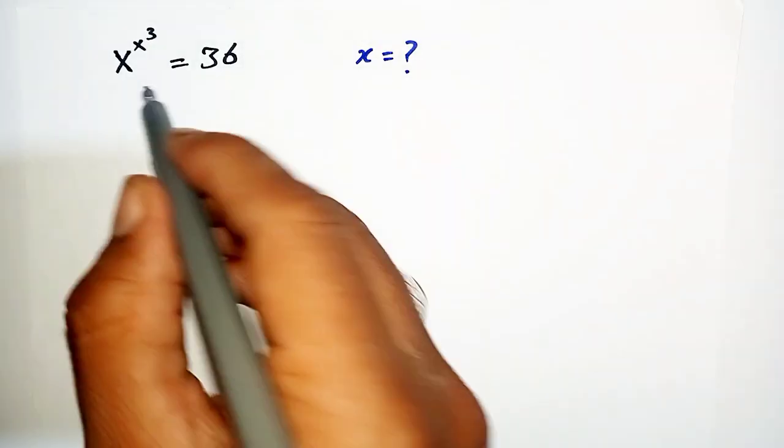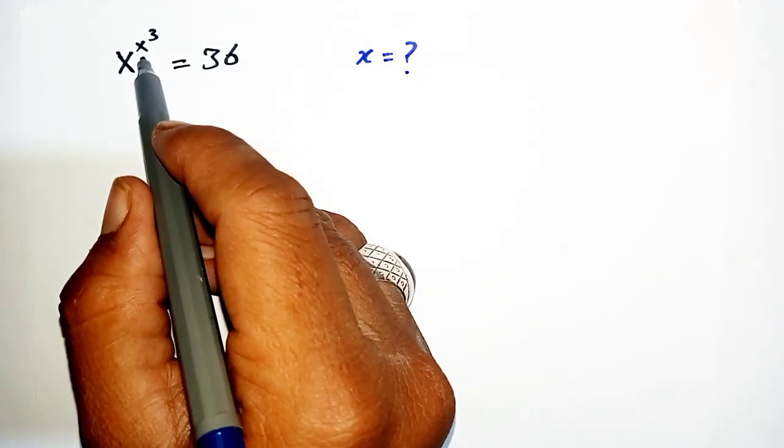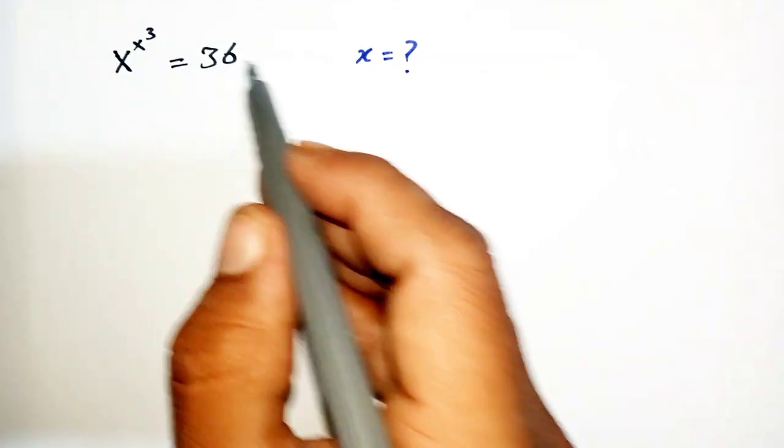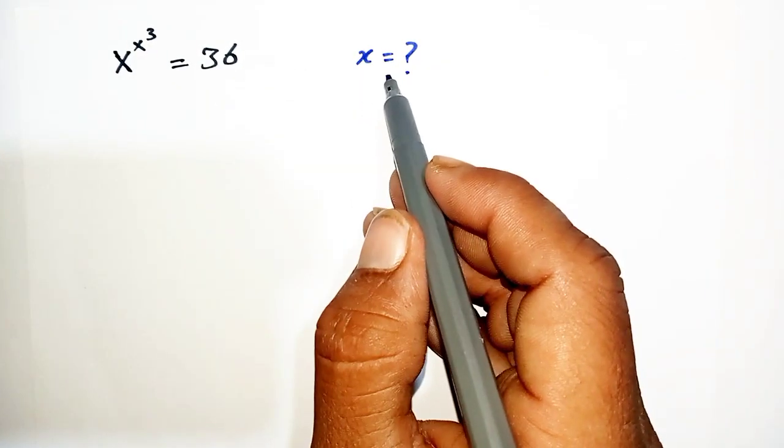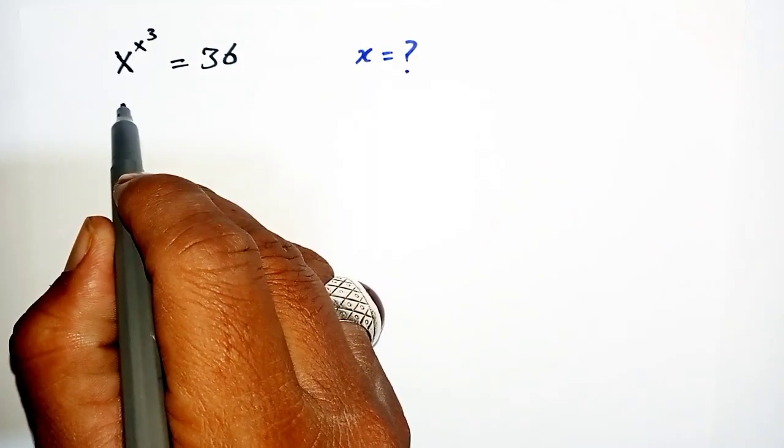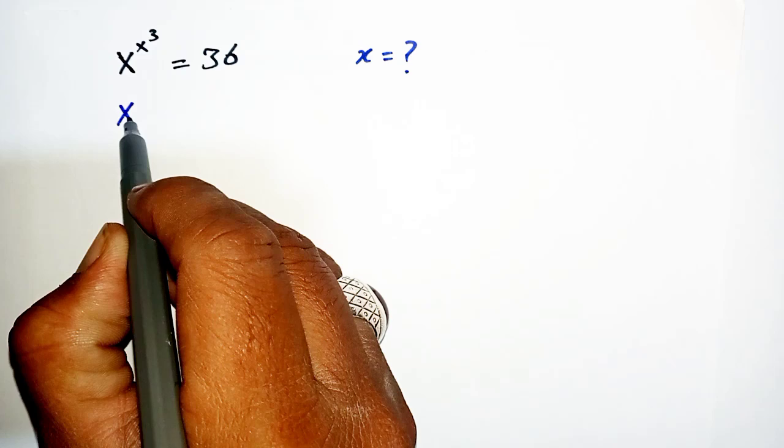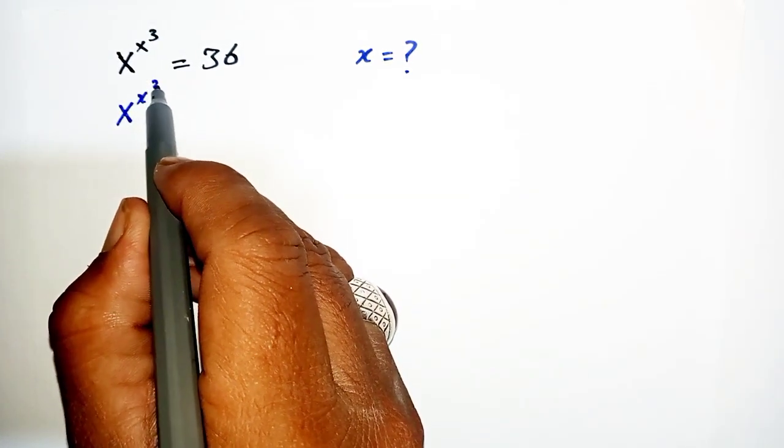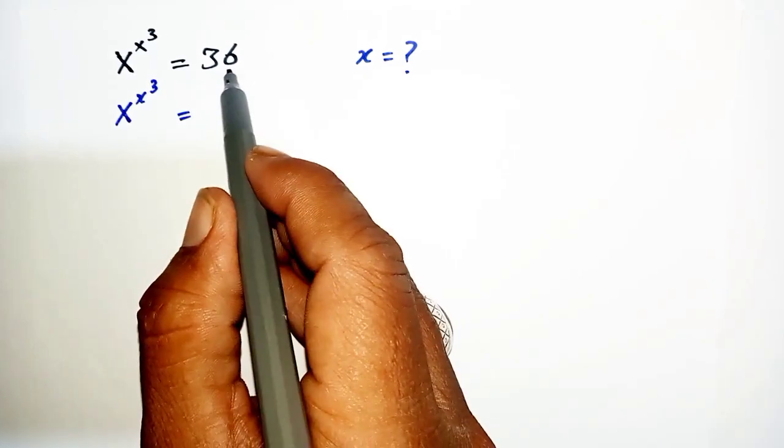Hello everyone, today our topic is x^(x^3) = 36. What would be the value of x? Students, first of all we write it like this: x^(x^3) and this 36 will be equal to 6^2.